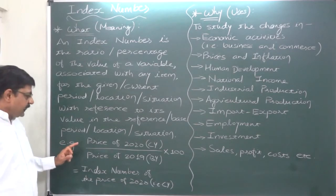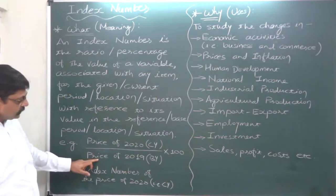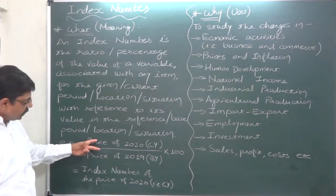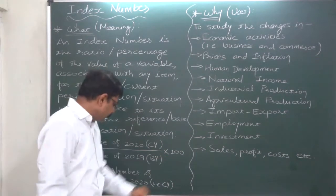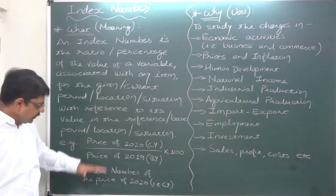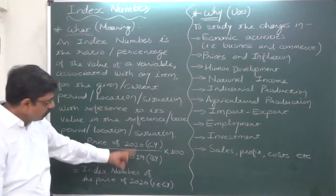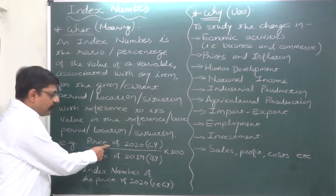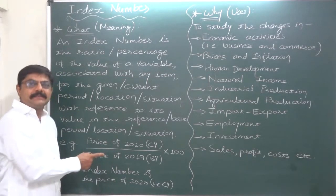Let's take an example. Say the price of something in 2020 — that is the current year — and the price in 2019 — that is the base year. The index number is the price of the current year divided by the price of the base year, multiplied by 100 to get the percentage. So this is the index number of price for 2020 — a ratio of the value of the variable in the current period to the value of the variable in the base period.